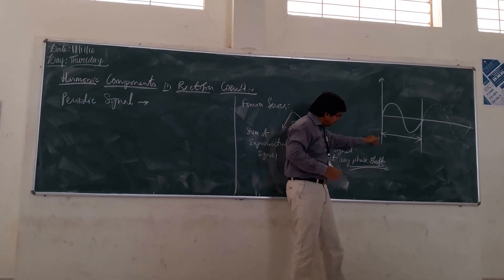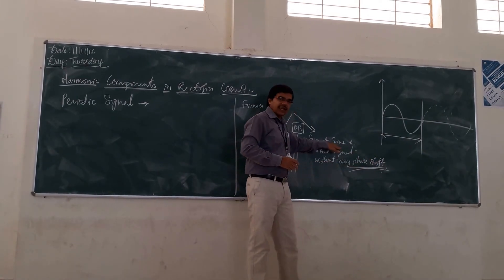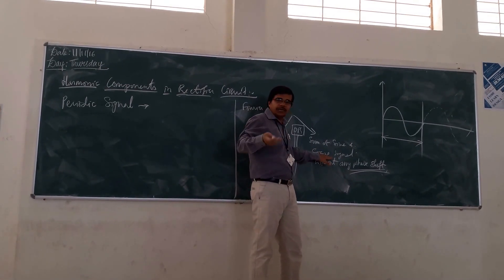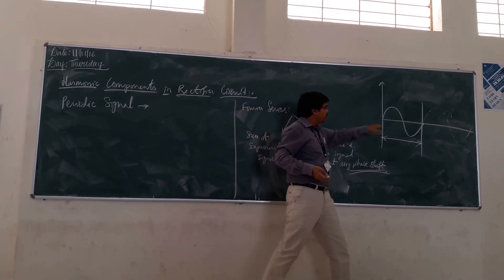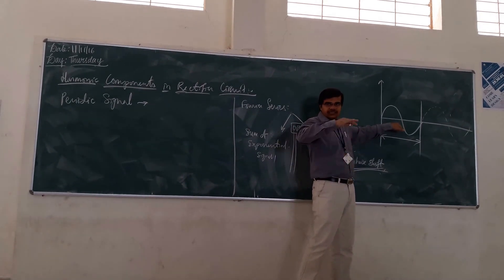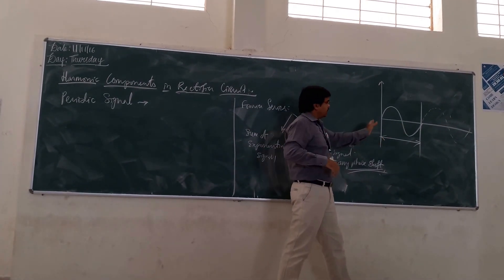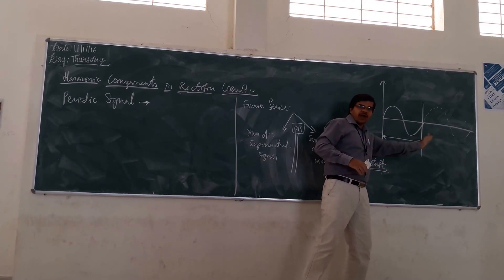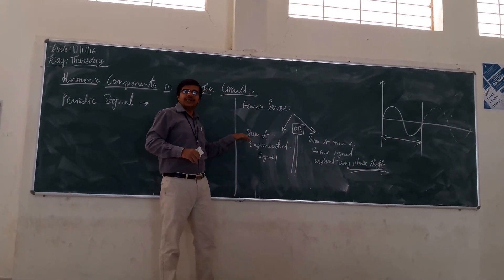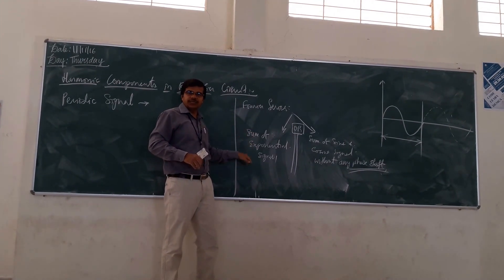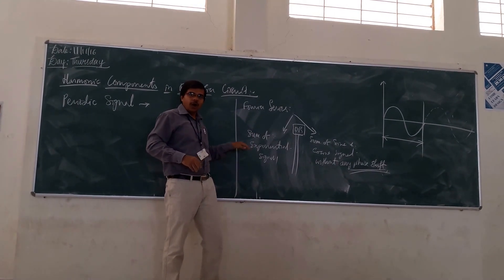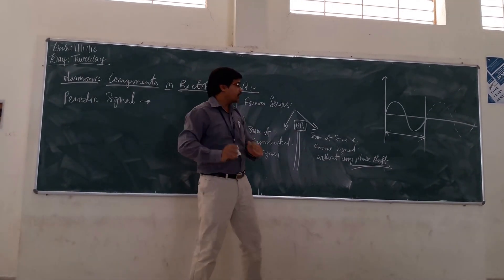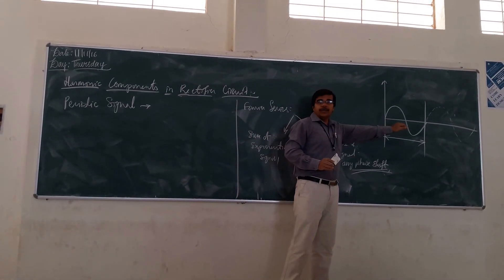In both ways: if you are dividing the periodic signal, you will get many more sine wave signals and cosine wave signals. Conversely, if you are adding many more sine and cosine waves, you will get this signal back. Or you can decompose the periodic signal into many more exponential signals, and if you add those exponential signals up, you will get the periodic signal.